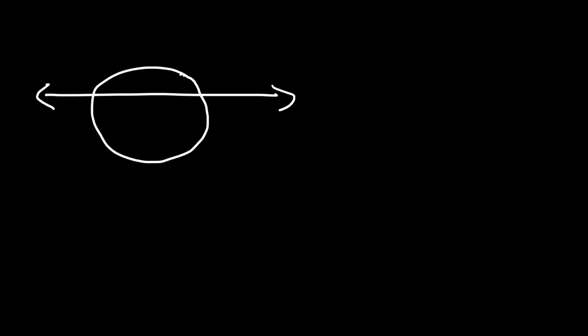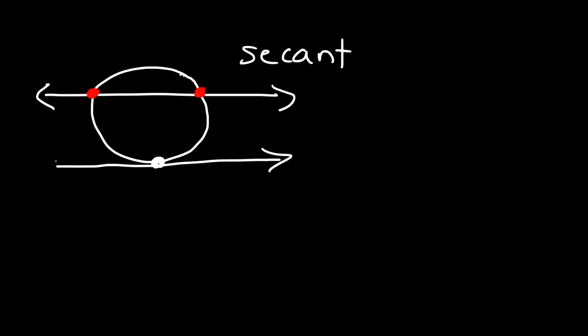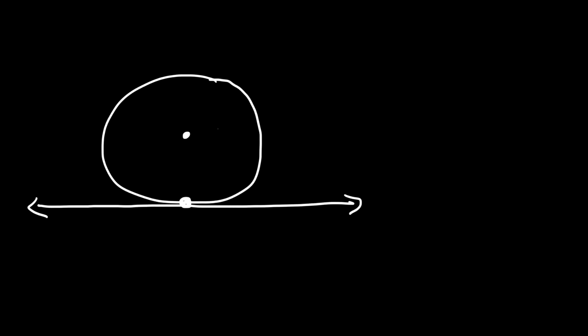Let's begin our discussion with a circle. What is the difference between a secant line and a tangent line? A secant line intersects the circle at two points. A tangent line touches the circle at one point — that point is known as the point of tangency. If we have a tangent line and draw the radius to it, with center C and point D, these two are perpendicular to each other — they meet at right angles.